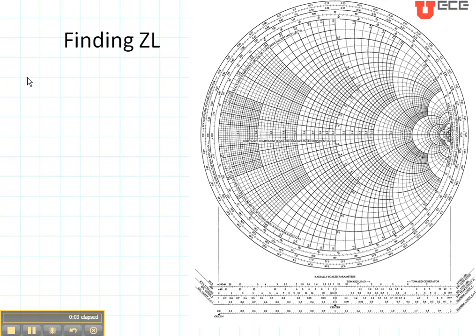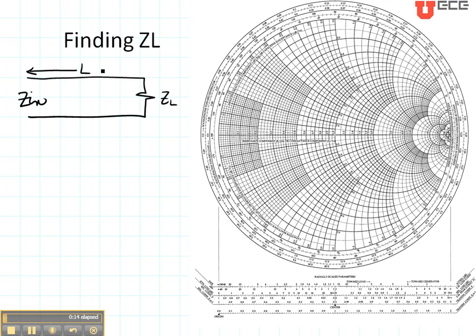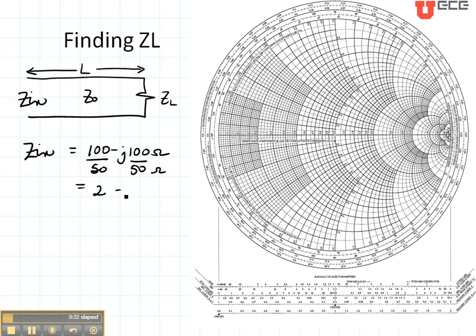Let's consider another example where I would like to find the load impedance, knowing the input impedance and the length of the line. I also have a characteristic impedance Z₀. Let's say that I measure that Z_in is 100 minus j100 ohms, and my line is 50 ohms. So my normalized Z_in is 2 minus j2. Let's plot it — real part of 2, imaginary part is negative, so it's below the central axis. Right there is my point Z_in.